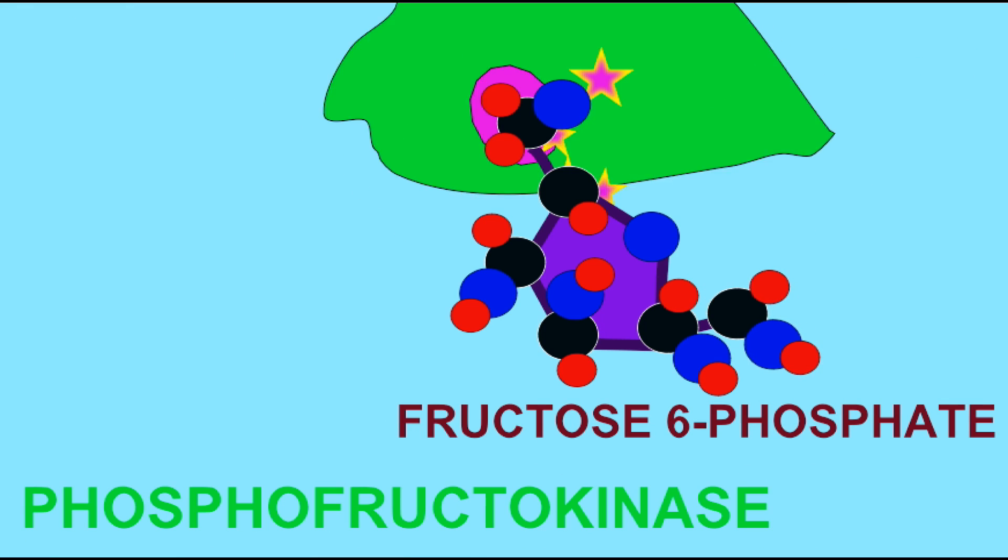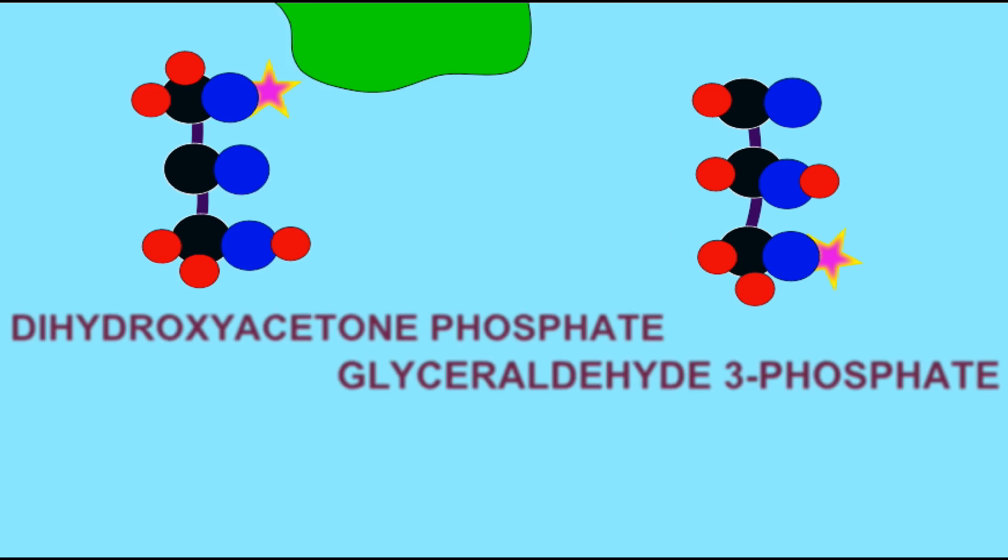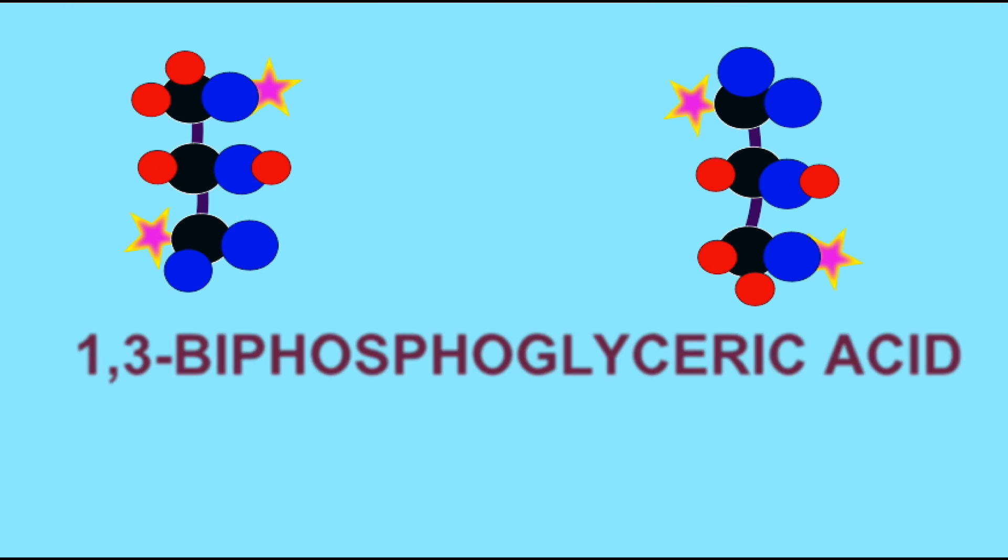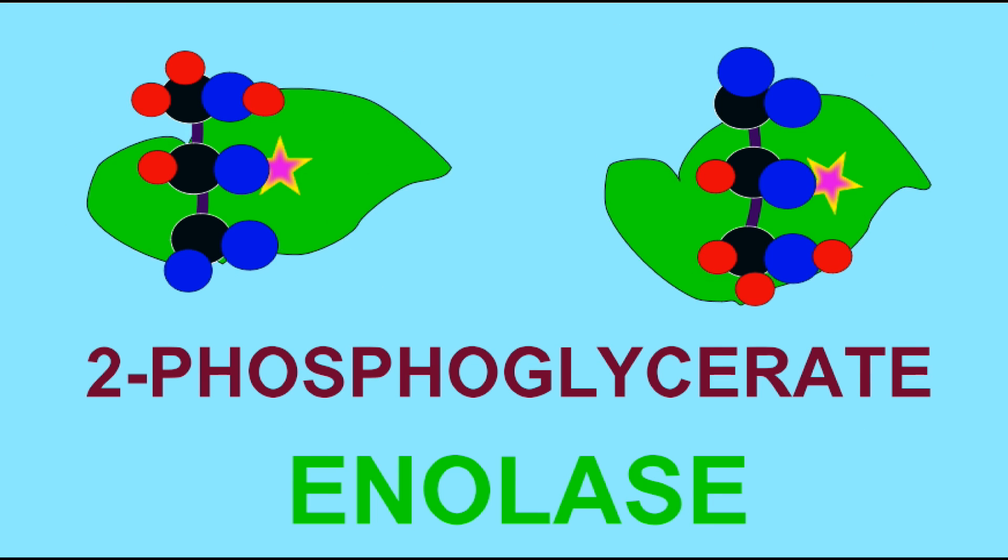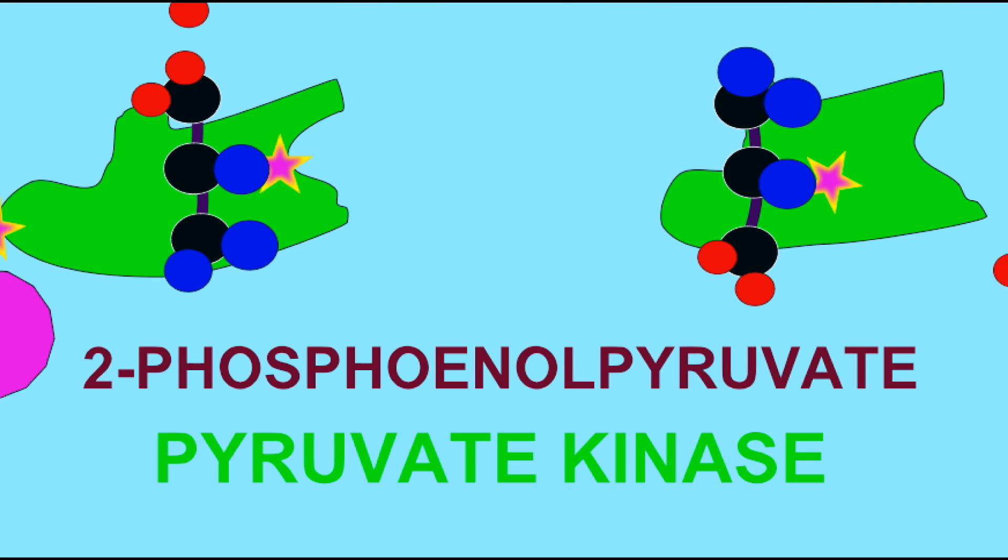Glucose is the primary fuel of many cells of the body, such as those of the brain, and other cells which can use other organic molecules as energy sources will metabolize glucose first, if it is present.